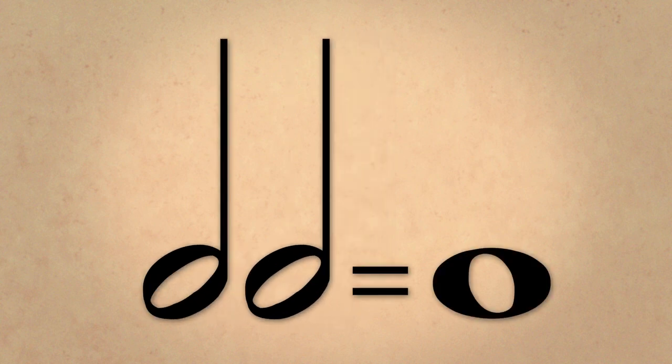A whole note, which is a circle. A half note, which is a circle with a stem, so two half notes equal one whole note.